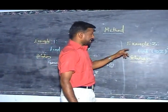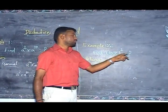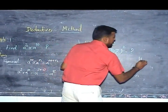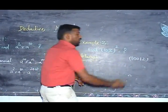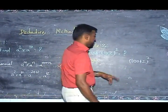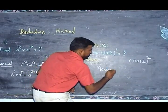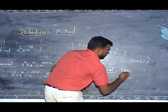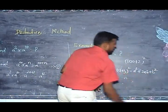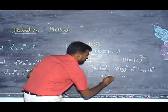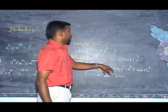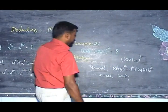Next, in the second example: find (102)². I can split 102 as 100 + 2, so the whole square becomes (100 + 2)². This is of the form (a + b)². We already know the formula: (a + b)² = a² + 2ab + b². Here, a = 100 and b = 2. Then we apply the formula to this particular example.